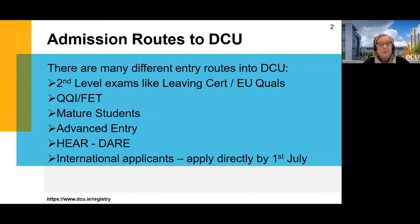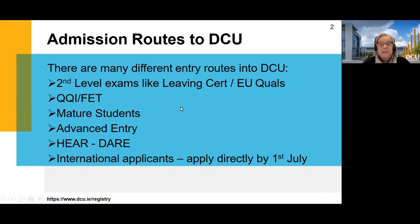QQI is a really good option. Then we have matures, who are anyone over 23 years of age. We have advanced entry, which are transfer students. So if you're studying, say, business in Maynooth and you've successfully completed year one, you can apply to transfer into year two of a similar business programme.